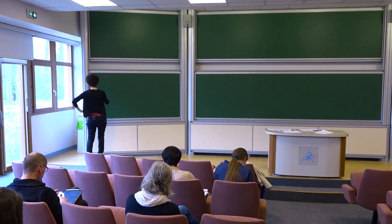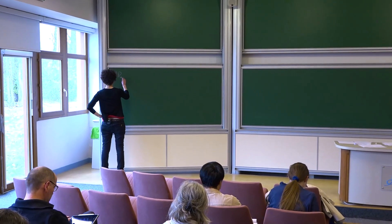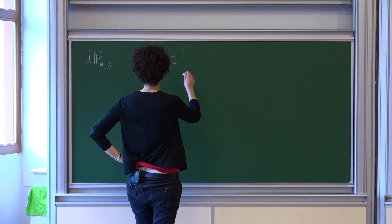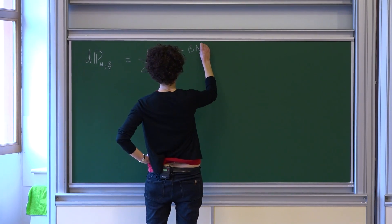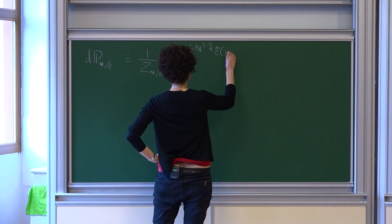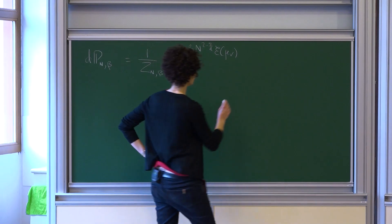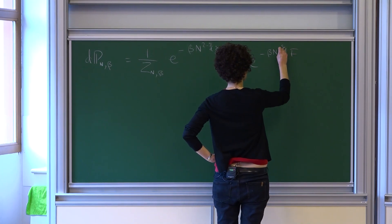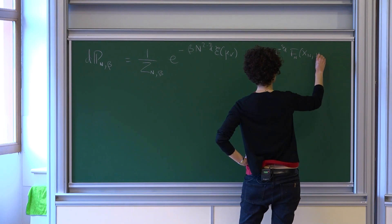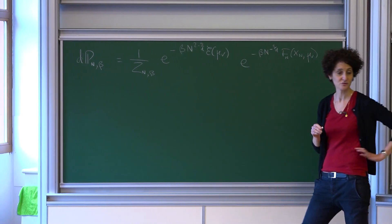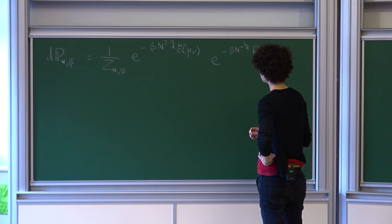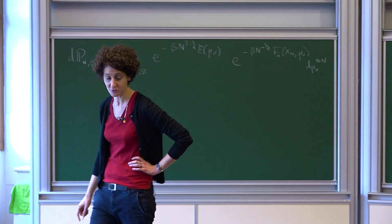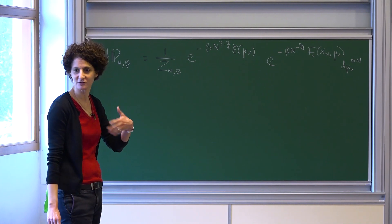Let's start again with our Gibbs measure. We have split things by taking out beta N^(2-s/d), the energy of the equilibrium measure, and then e^(-beta N^(1-s/d)), the next order energy. I'm back to the usual scale, not rescaling things anymore, and I'm going to cheat enormously by confusing the equilibrium measure and the thermal equilibrium measure, just because it's more convenient for my presentation.